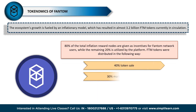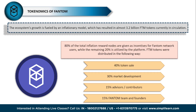Popular blockchain project Fantom is using an innovative model to grow its ecosystem. With nearly 3.2 billion FTM tokens in circulation, the project has adopted an inflationary approach that decreases as more users join the platform. To further incentivize adoption, the platform uses 20% of the total inflation rewards for nodes, while giving the rest as incentives for users contributing to the overall growth of the network. These incentives include negligible transaction fees and rewards for users who actively participate in the network's development.